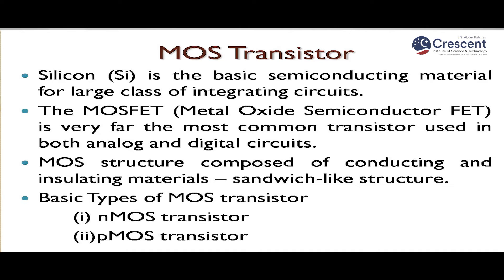Silicon is the basic semiconducting material for fabrication of an IC. The MOSFET — Metal Oxide Semiconductor transistor — is the most commonly used transistor for the design of analog and digital circuits. The MOS structure is composed of conducting and insulating material in a sandwich-like structure.